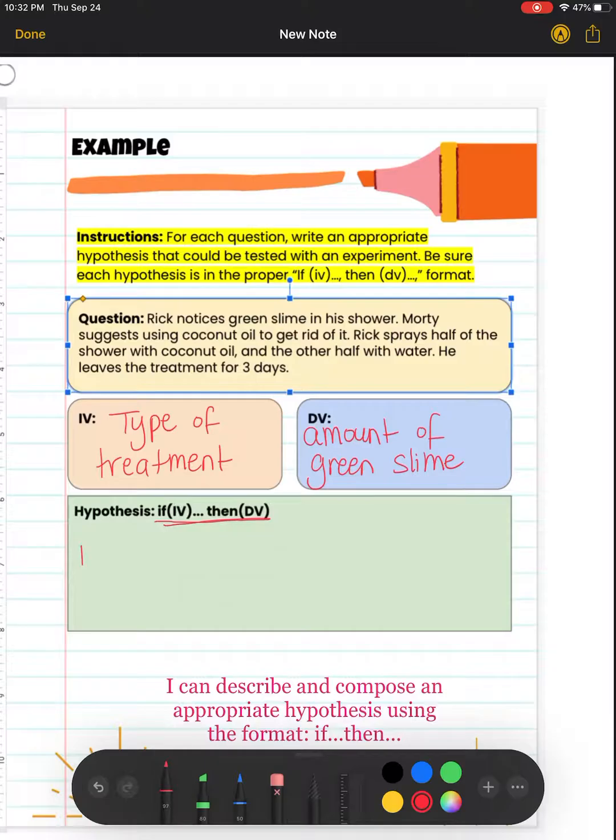So if the type of treatment... and if you remember at the beginning, I said that a hypothesis must be two things: specific and testable. So we have to be as specific as possible when writing a hypothesis. So we know that we have two types of treatments here, water and coconut oil. We need to specify which one are we talking about, which type of treatment are we discussing or are we including in our hypothesis.